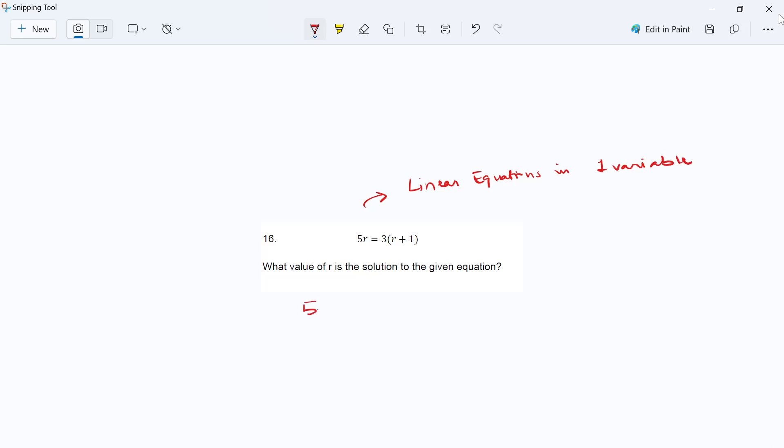Here we have 5r = 3(r + 1). The first thing we need to do is simplification. On the right-hand side, we can distribute 3, so you get 3 times r, that is 3r, plus 3 times 1, that is 3.